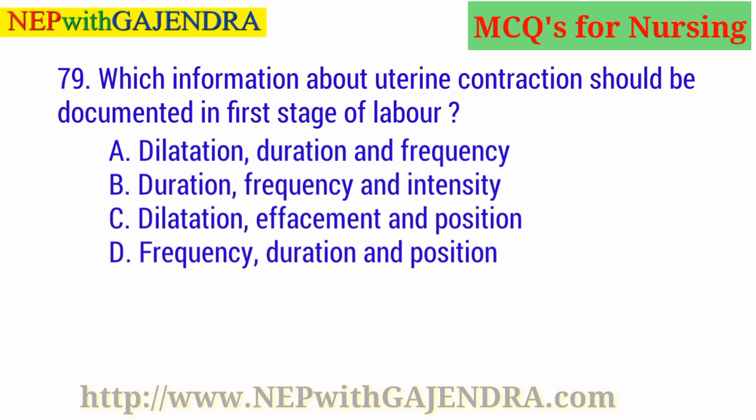Which information about uterine contraction should be documented in the first stage of labor? A. Dilatation, duration and frequency. B. Duration, frequency and intensity. C. Dilatation, effacement and position. D. Frequency, duration and position.